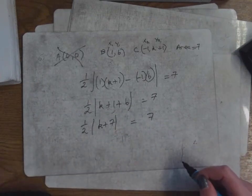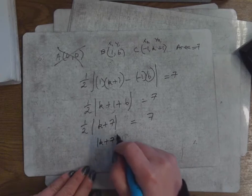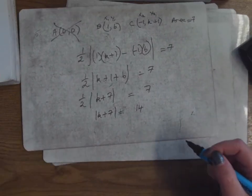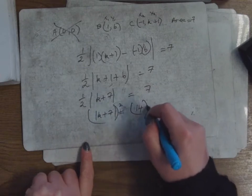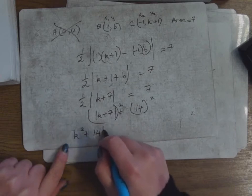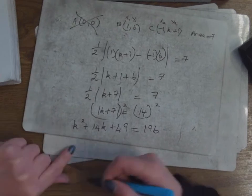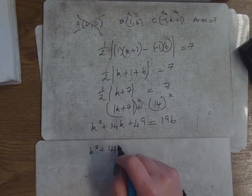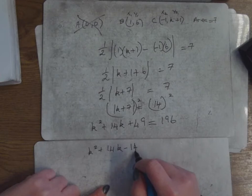I can get rid of that half by multiplying across by two, so I get |k + 7| = 14. This is a modular equation. With a modular equation, it could be positive or negative. To make sure it's positive, square both sides. So squaring: k² + 14k + 49 = 196. We just did that in algebra — square the first, twice the first by the second, square the last. 14 squared is 196. Then bring it over.